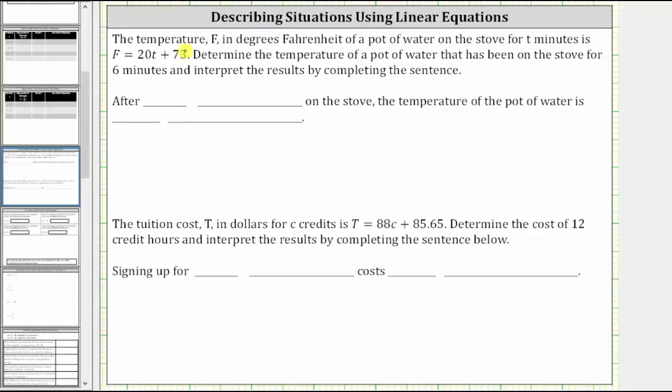In the first example, the temperature F in degrees Fahrenheit of a pot of water on the stove for T minutes is F equals 20T plus 73. Determine the temperature of a pot of water that has been on the stove for six minutes and interpret the results by completing the sentence.